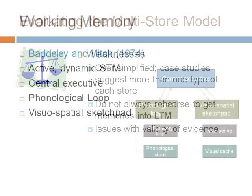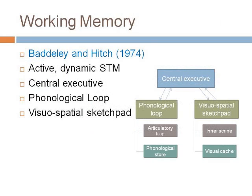Our second model is the Working Memory model proposed by Baddeley and Hitch in 1974. This model sees short-term memory as an active dynamic memory system, made up of a central executive, a phonological loop and a visuospatial sketchpad. The central executive takes a supervisory role controlling the phonological loop and the visuospatial sketchpad. These two components work on different types of information: phonological for verbal tasks and visuospatial for visual image-based tasks. Each of the components is divided into a rehearsal mechanism and a passive store. The articulatory loop, for example, rehearses verbal information and the phonological store holds onto it. In the visuospatial sketchpad, the inner scribe is the active rehearsal mechanism and the visual cache is the passive store.